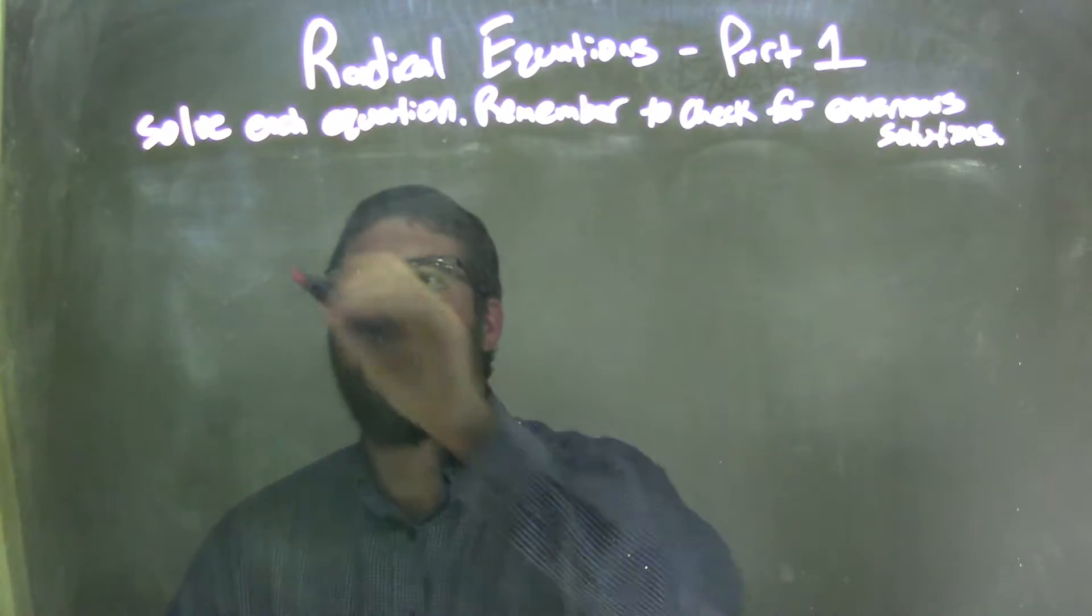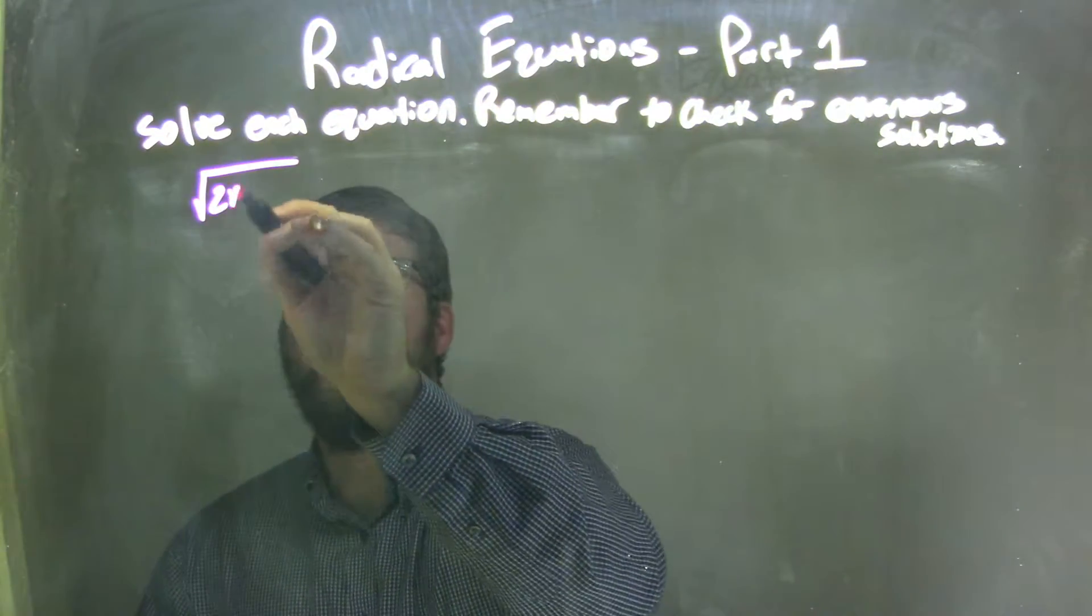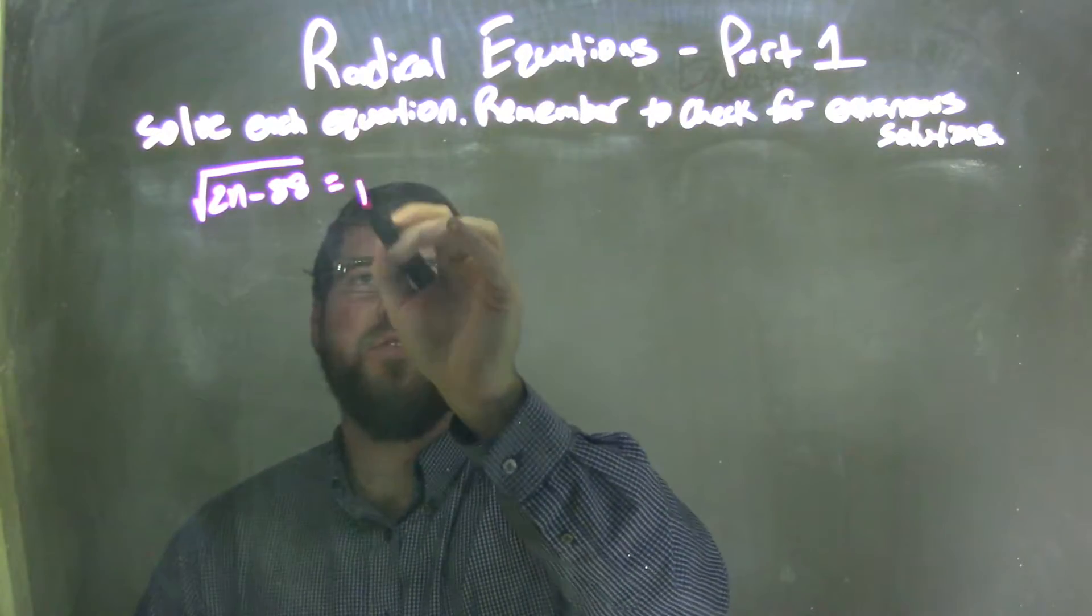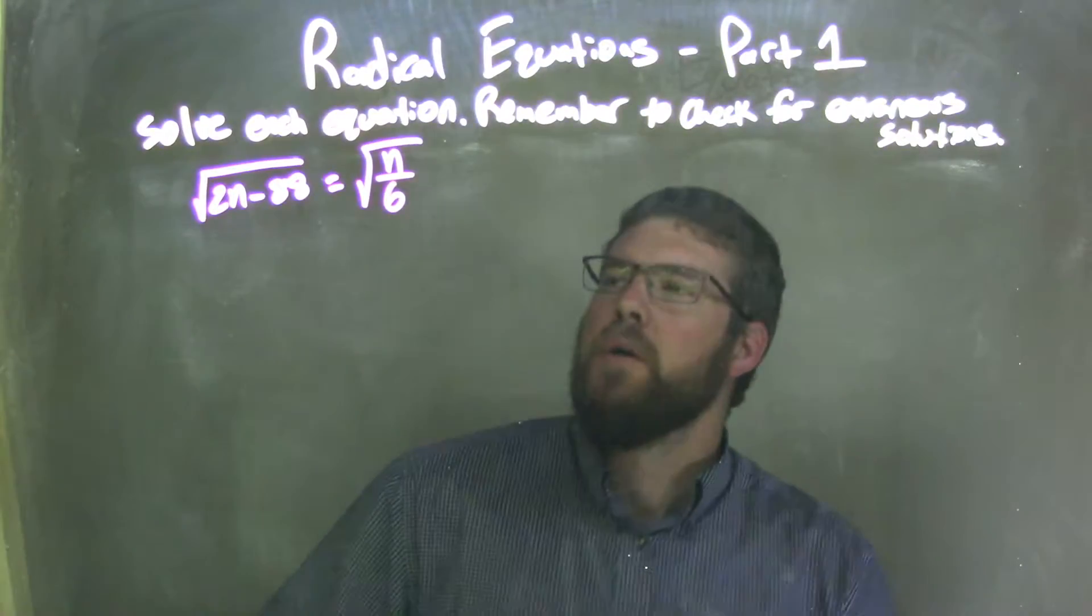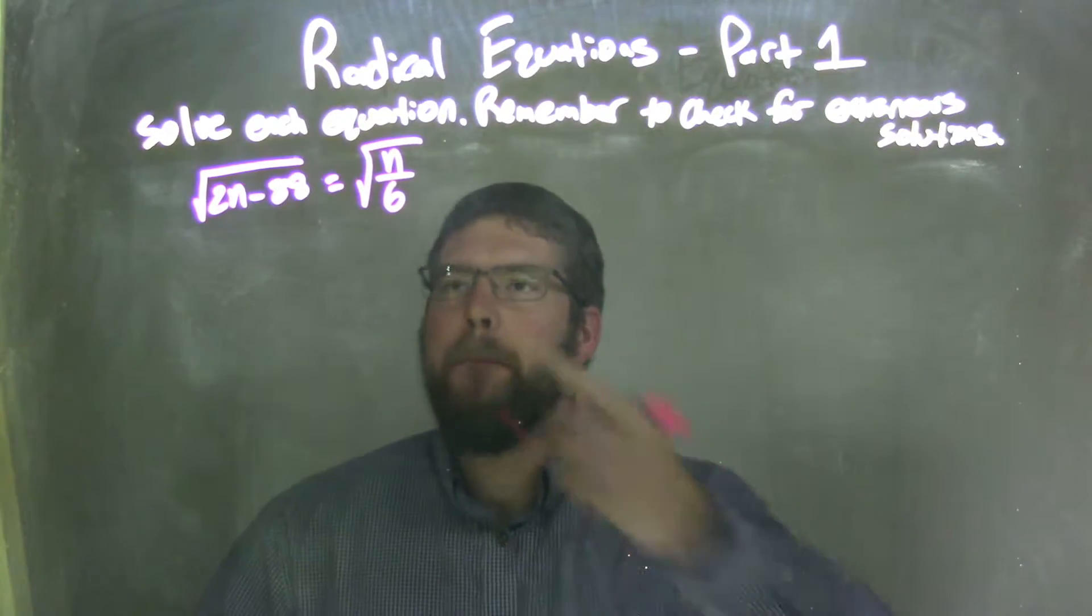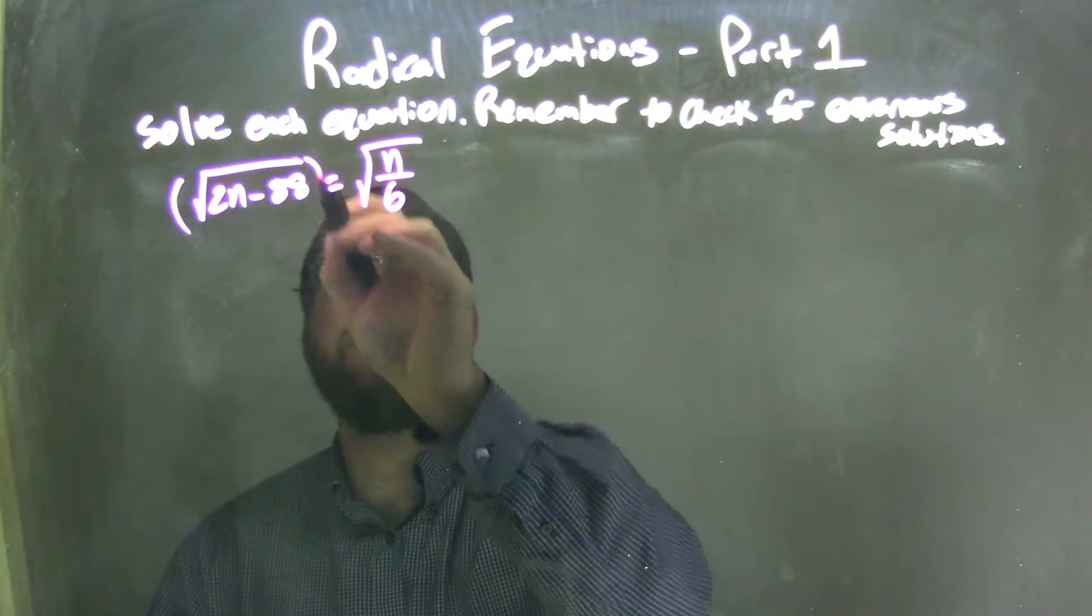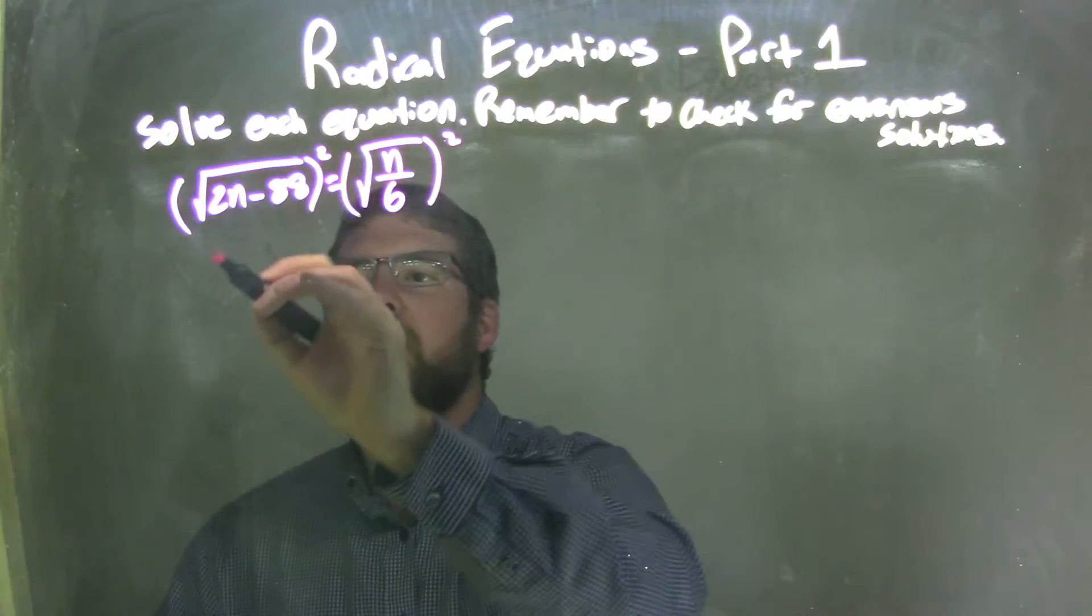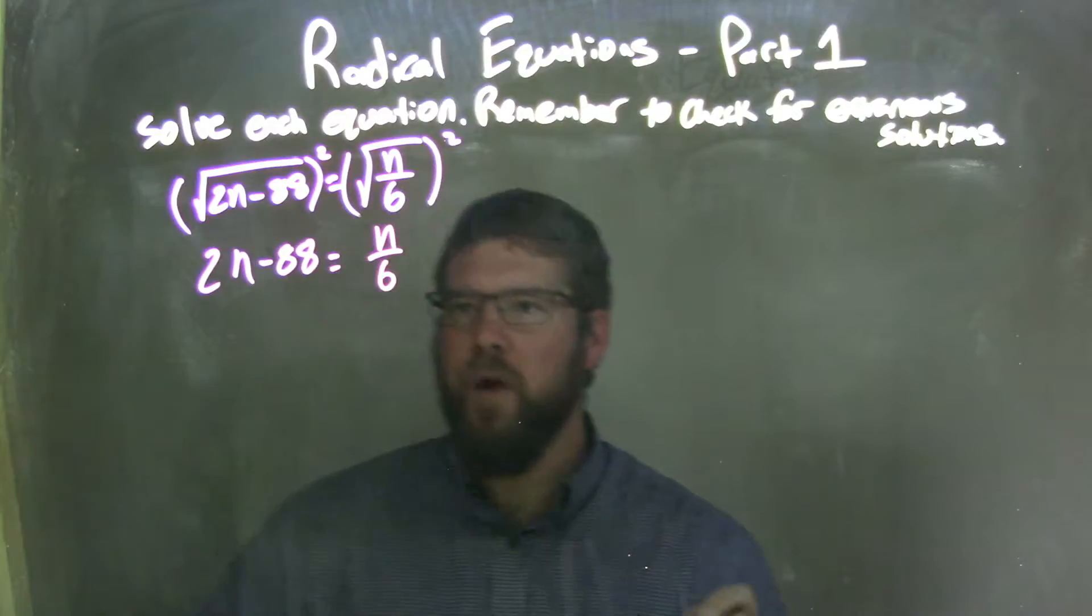So, if I was given this equation, the square root of 2n minus 88 equals the square root of n over 6. Well, first step, both square roots are already isolated, so I can just square both sides. Let's eliminate both of these radicals, leaving me with 2n minus 88 on the left, and n over 6 on the right.